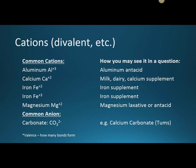Let's look at how a cation and anion combine. Calcium (Ca+2) and carbonate (CO3 2-) make calcium carbonate, the active ingredient in Tums — an antacid. In exam questions, you won't see the plus-two or plus-three notation. Aluminum will appear as 'aluminum antacid,' calcium as 'milk,' 'dairy,' or 'calcium supplement,' iron as 'iron supplement,' and magnesium as a laxative or antacid.